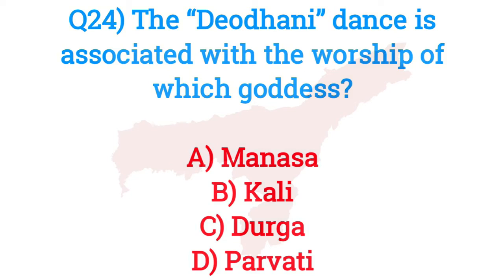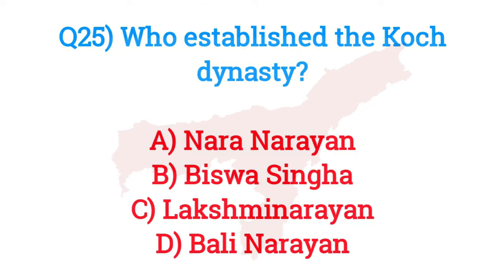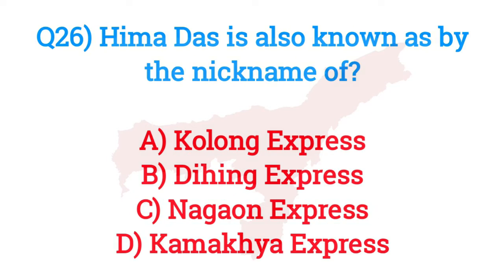Question number twenty-four: The Deodhani dance is associated with the worship of which goddess? The answer is option A — Manasha. Question number twenty-five: Who established the Koch dynasty? The answer is option B — Biswa Singha.